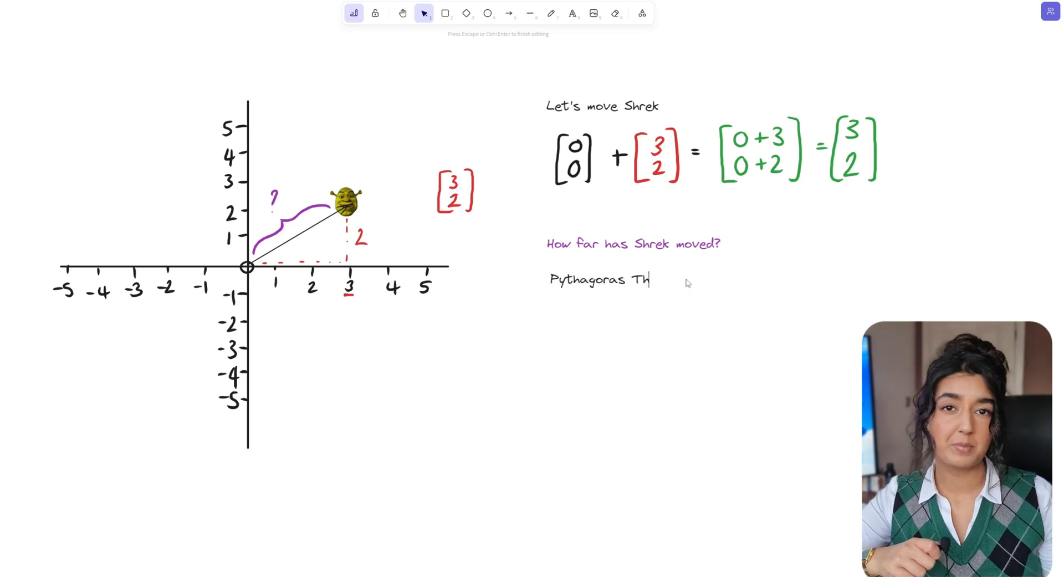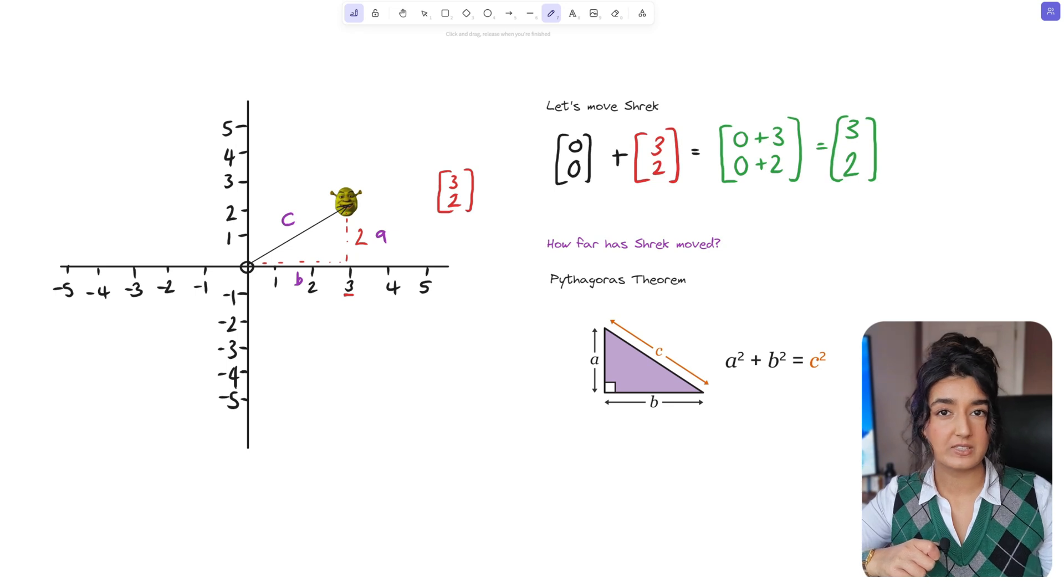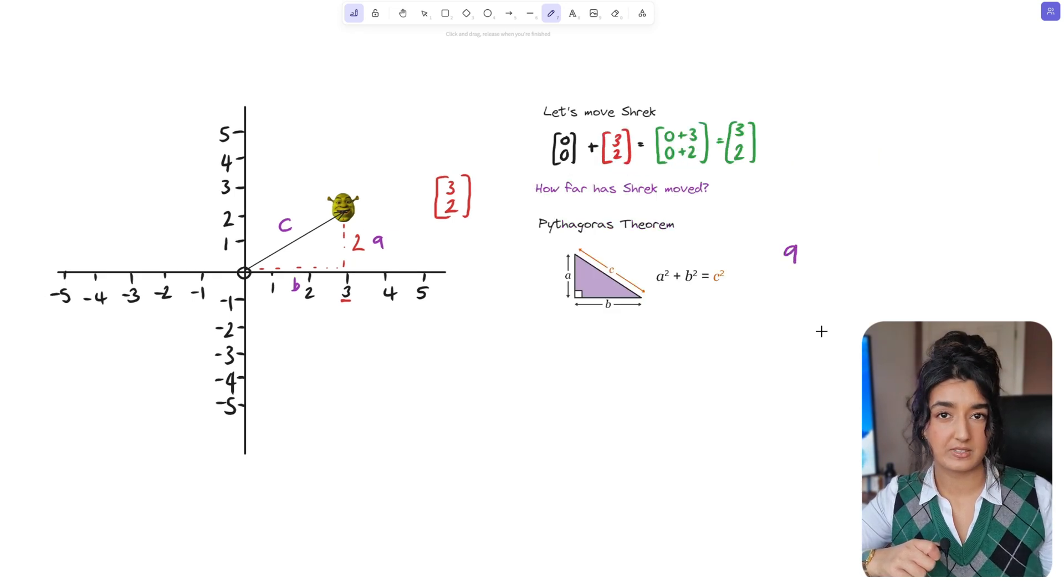For those who don't know already the Pythagoras theorem is a way to calculate the longest side of a right angle triangle when you have two known lengths. The formula for this is a squared plus b squared equals c squared, c being the longest side and a and b being the other sides.